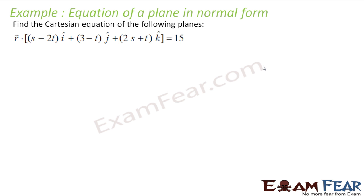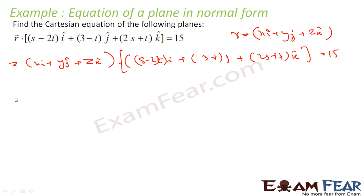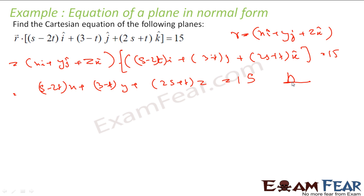Again, similar to this, we have to find the Cartesian equation for this plane. Here it is a little more involved but not that difficult — almost the same. I put R as xi plus yj plus zk. This becomes (xi plus yj plus zk) dot [(s minus 2t)i plus (3 minus t)j plus (2s plus t)k] equals t. This is nothing but (s minus 2t)x plus (3 minus t)y plus (2s plus t)z equals t. And that is my answer.